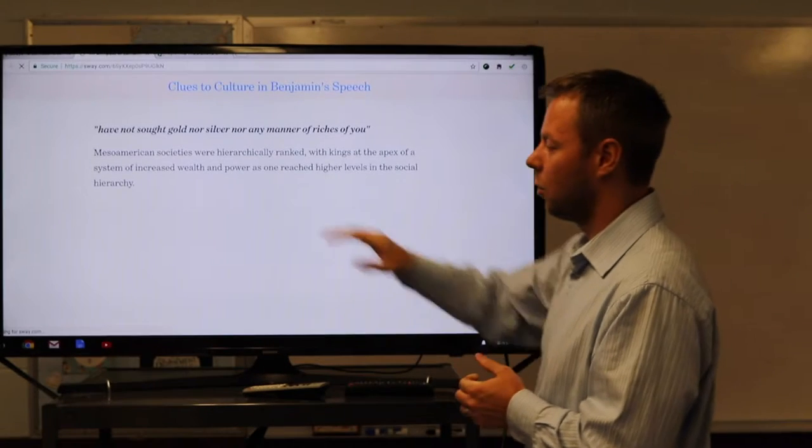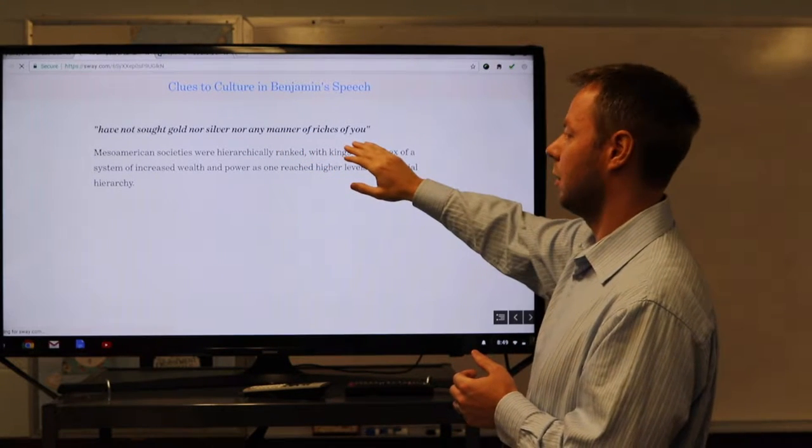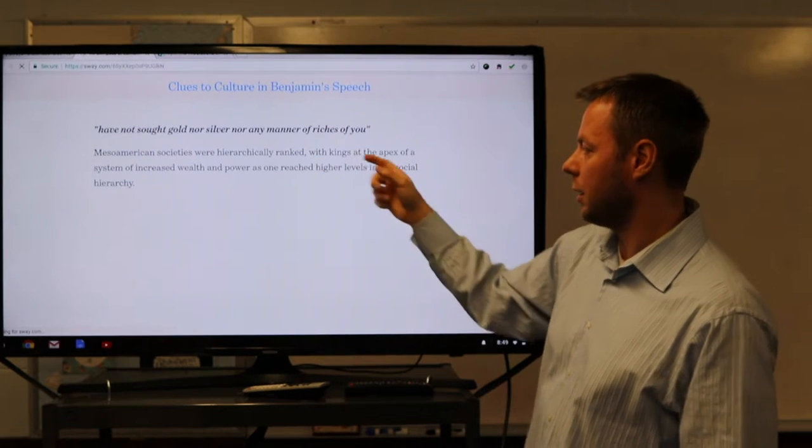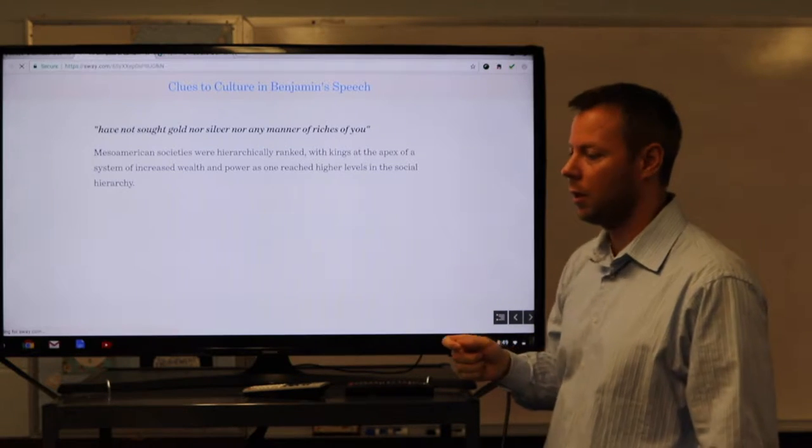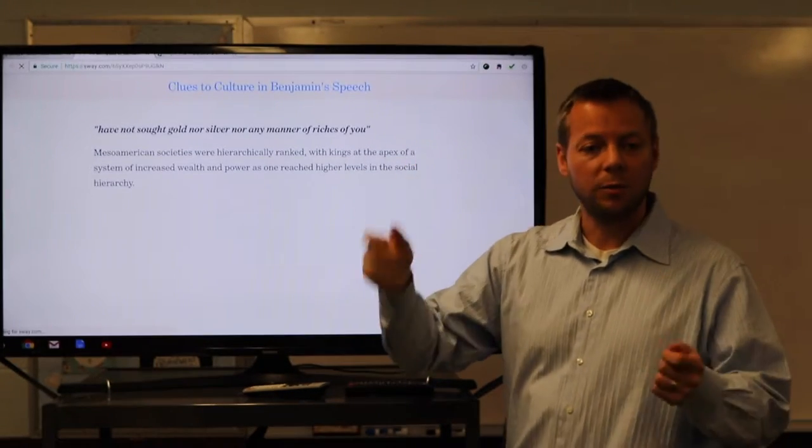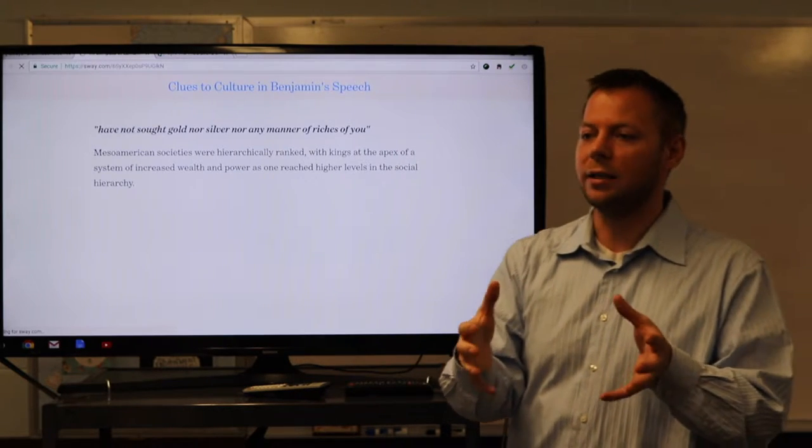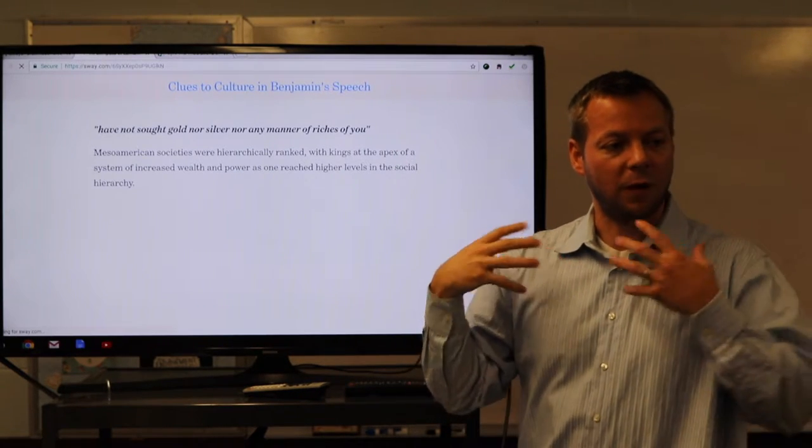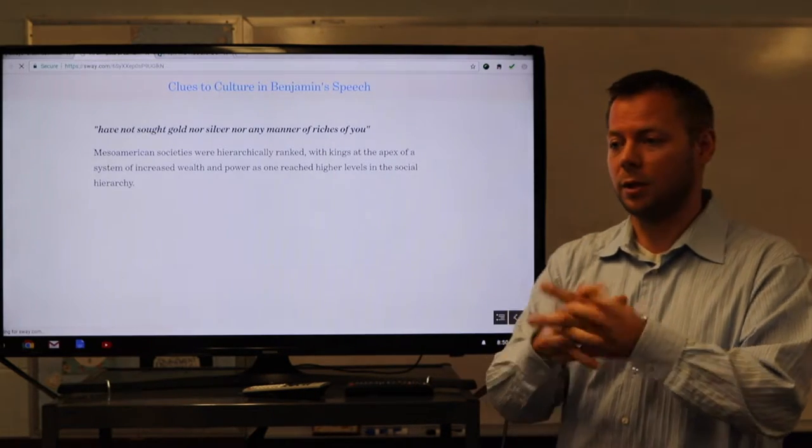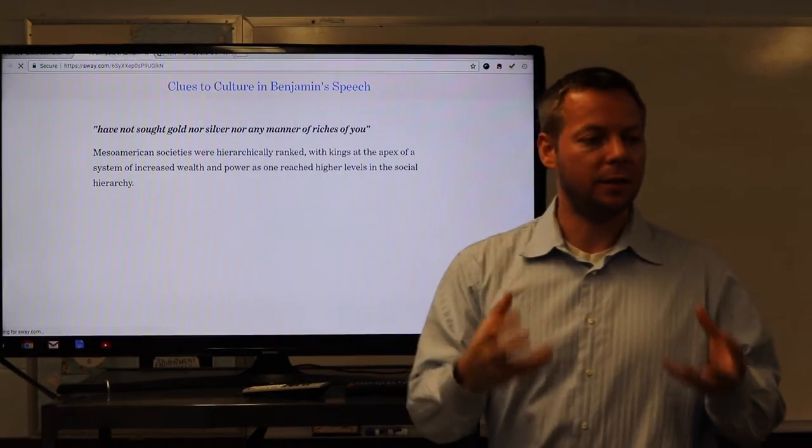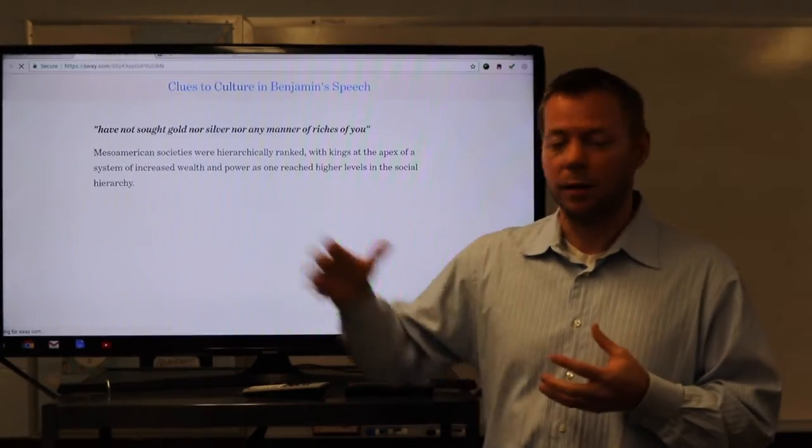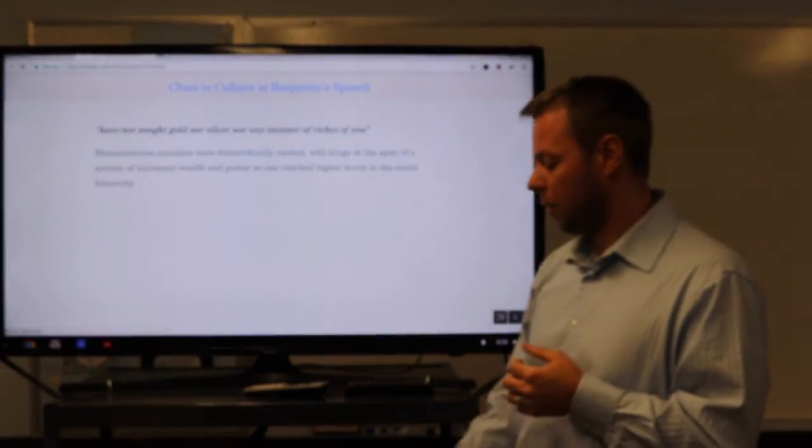Nor has he sought gold nor silver nor any manner of riches of you. As we've talked about before, Mesoamerican societies by this point were hierarchically ranked with kings at the apex of a system of increased wealth and power as one reached higher levels in the social hierarchy. Right? But what is Benjamin doing? He's sticking to that Nephite egalitarian ideal that we discussed. The founding document that Nephi first lays out and Jacob through his speech, we covered that a few sessions ago, the Nephite egalitarian ideal, Benjamin's saying, I'm still sticking to that. Right? I'm not seeking to be supported by the people.